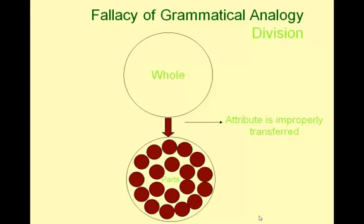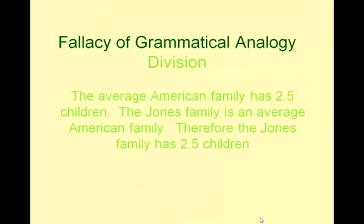Division works in the opposite manner: an attribute is given to the whole group and wrongly transferred to the parts of the group. For example: 'The average American family has 2.5 children. The Jones family is an average American family. Therefore, the Jones family has 2.5 children.'